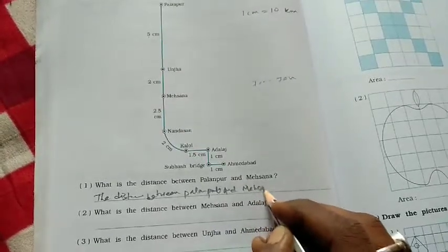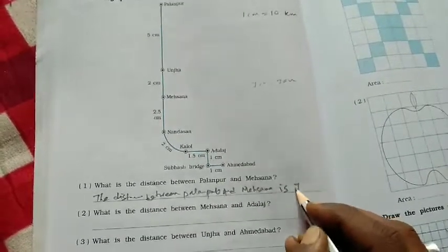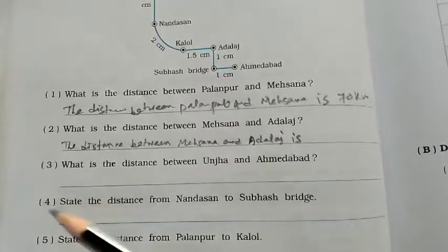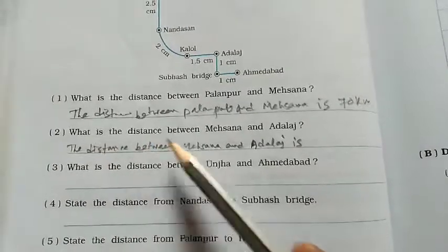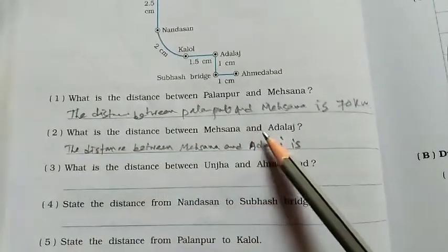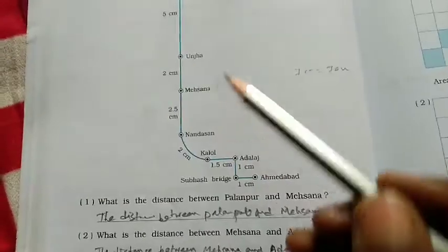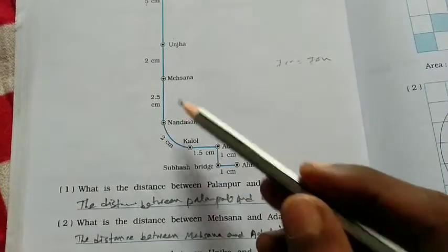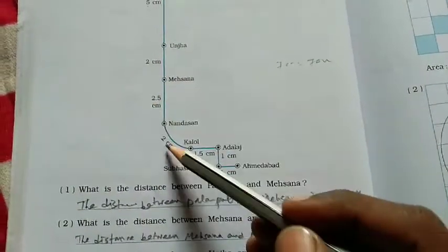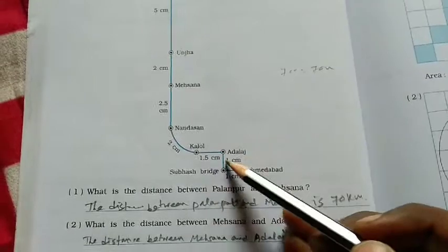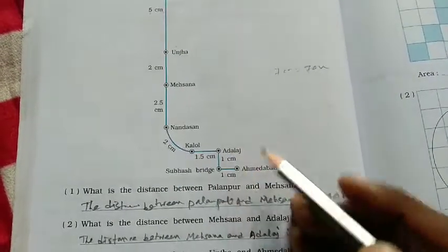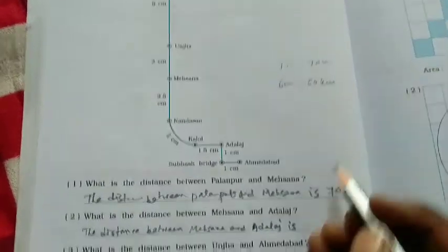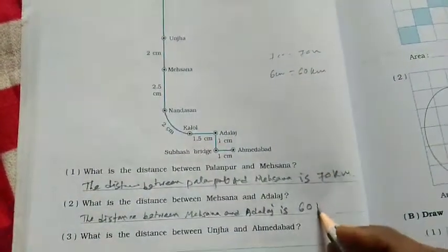Next question, question number 2: What is the distance between Mahesana and Adalaj? The distance is 2.5 plus 2, 4.5 plus 1.4, equals 6. Okay, so 6 centimeters. You know that 6 centimeters equals 60 kilometers. So write here 60 kilometers.